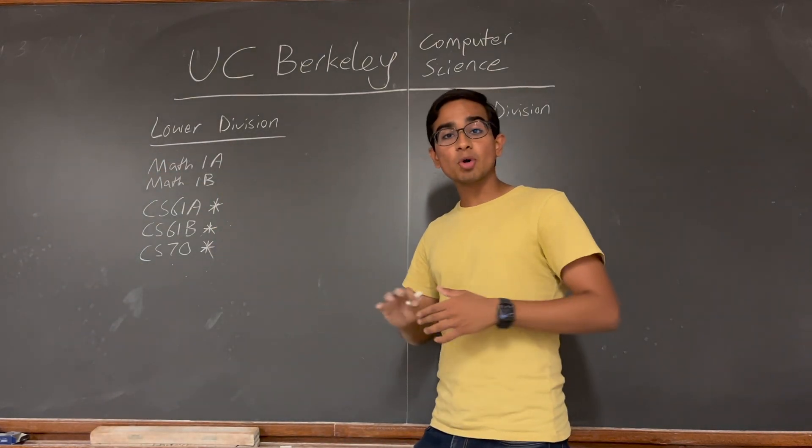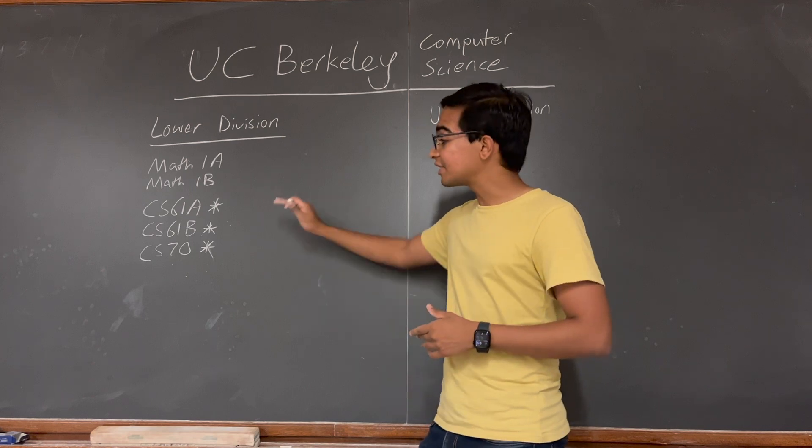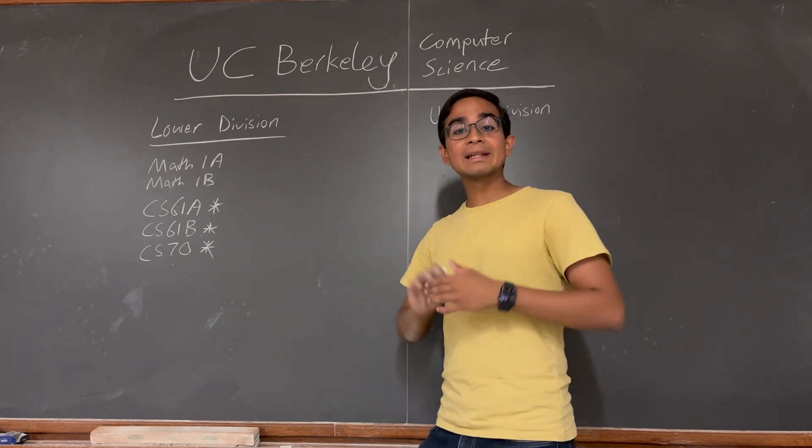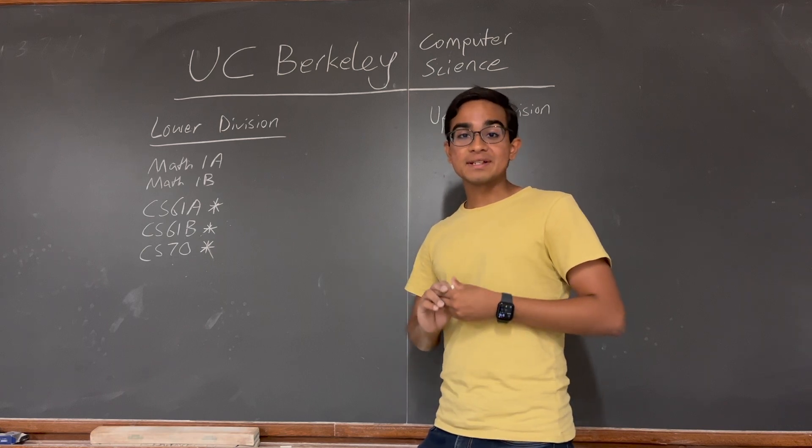These three classes are very important because you need an average GPA of 3.3 in these three classes in order to declare the computer science major at UC Berkeley in the College of Letters and Science.